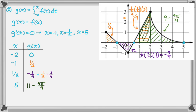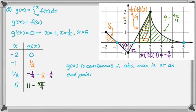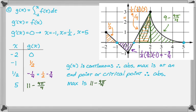Now I want to write my answer. g(x) is continuous, and therefore the absolute maximum occurs at an endpoint or a critical point. We've evaluated the function at all endpoints and critical points. The values are 0, 1/2, −1/4, and 11 minus 9π over four. That last value is clearly the largest, so by the Candidates Test, the absolute maximum value of g is 11 minus 9π over four.